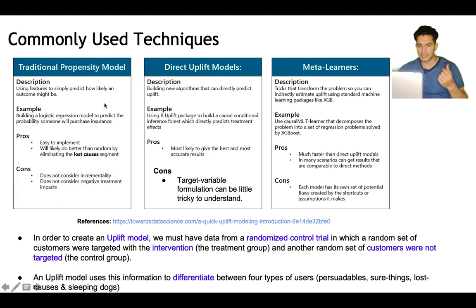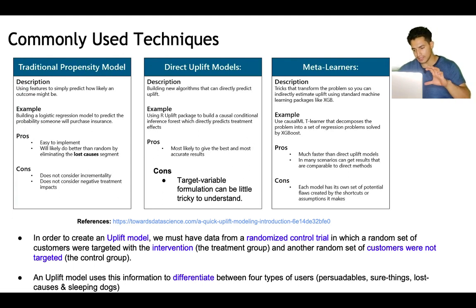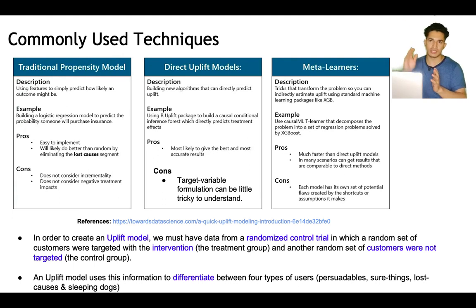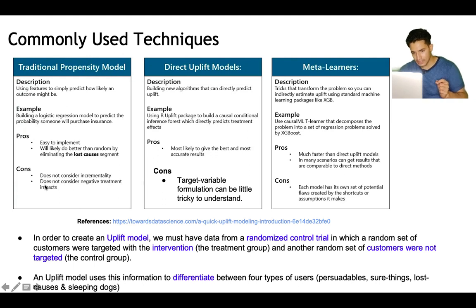What are the commonly used techniques for uplift modeling? The first is the traditional propensity model — it uses features to simply predict how likely the outcome might be. It doesn't detect uplift, it just detects propensity of a customer buying. It can ignore the lost causes segment but it can't segregate between sure things, sleeping dogs, or persuadables. Pros: easy to implement; cons: does not consider incrementality or negative treatment impacts.